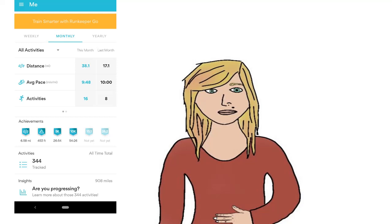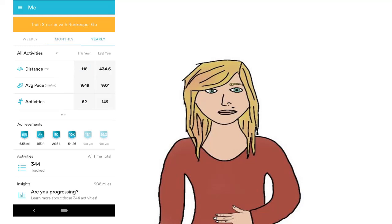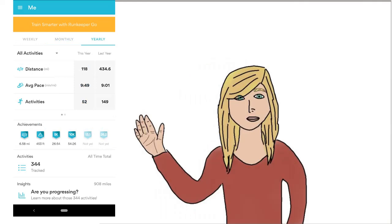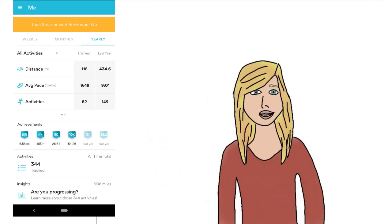Let's look at the years. Last year I did 434 miles and my average pace was nine minutes a mile, which would work out to be something like six or seven minutes per kilometer. I did 149 activities last year. This year it's been a third of the year so far and I've done a third of the activities. I need to increase the miles for the rest of this year as long as I don't get any more running injuries.